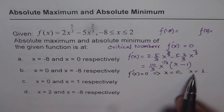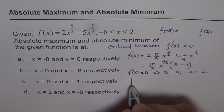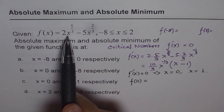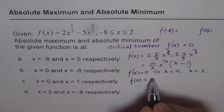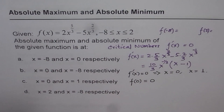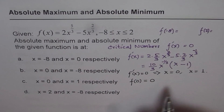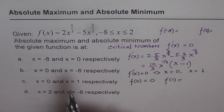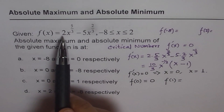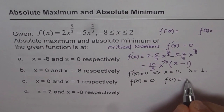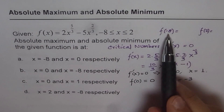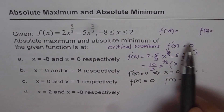At x = 0: substituting 0 into the function gives f(0) = 0. At x = 1: substituting 1 gives 2 minus 5, so f(1) = minus 3. Now we also need to check the values at the boundaries, minus 8 and 2.